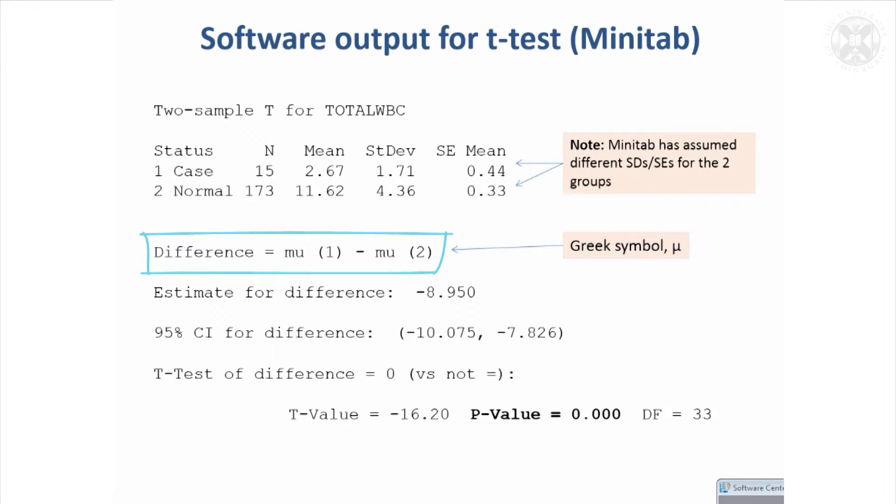This line's not very helpful—it just tells us the difference is going to be mu1 minus mu2. You might think, what's mu1, mu2? Minitab has this habit of giving phonetic interpretations of Greek symbols, so this is meant to be mu, which people use to denote means. That's not really very helpful, but it's saying the estimate for the difference is minus 8.95, which is the difference in the means.